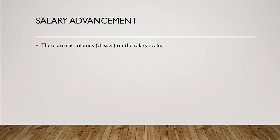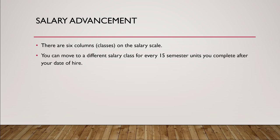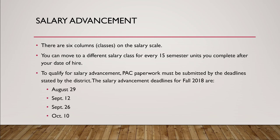There are six columns or classes on the salary scale. When you were hired at Mesa College, human resources and payroll determined which column you fell in. You can move to a different salary class for every 15 semester units completed after your date of hire. To qualify for salary advancement, PAC paperwork must be submitted by the deadlines stated by the district. The salary advancement deadlines for fall 2018 are as listed, and for all other semesters the deadlines are typically within the first two months of the semester.